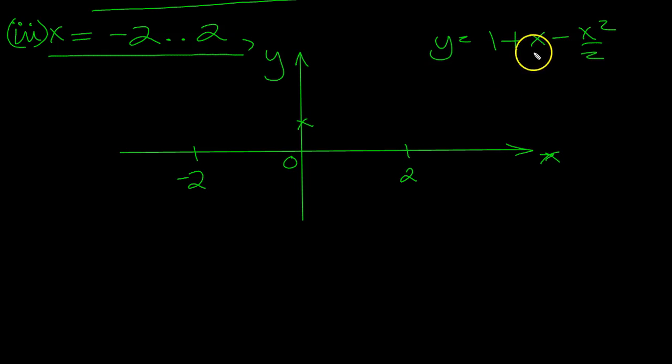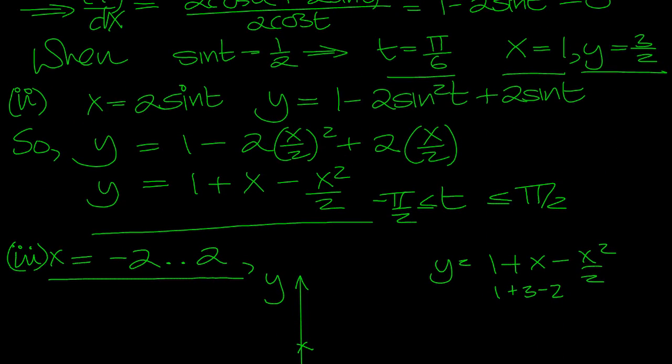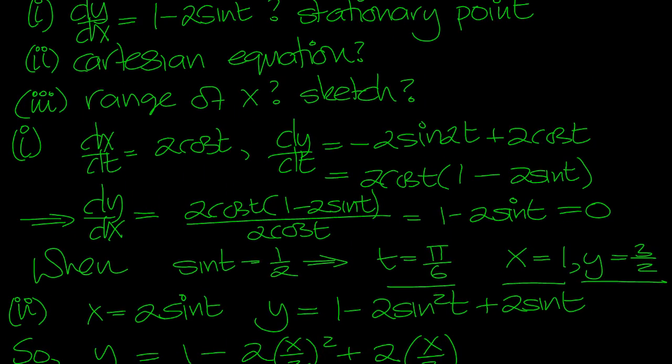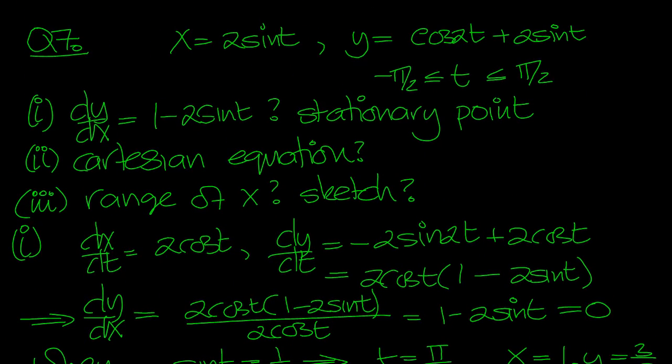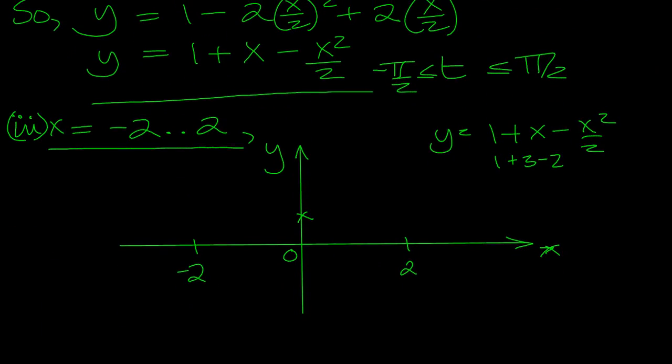Okay, at x equals 2, we've got 1 plus... wait, 2 squared is 2... Hang on. Let's just have a look at it again. Yeah, I think that looks okay. y is equal to 1 minus 2 sine squared plus 2 sine t. Yeah, everything looks fine.